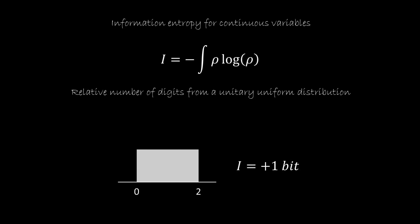This definition can generalize for continuous variables, but it can't give you the absolute number of digits, because in this case it would be infinite. So what it gives you is the relative number of digits from a uniform distribution from zero to one. So for example, a uniform distribution from zero to two is going to be plus one bit, because we need to have one bit of information to know whether we are on the left side or on the right side, to then re-reach the entropy of a distribution from zero to one.